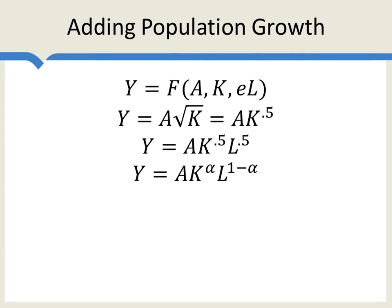This is called a Cobb-Douglas production function. The good reason for writing it this way is that when you double capital and labor, you double output. So if we're thinking about capital and labor as the only factors of production, it makes sense that if you double the only things you need to produce, you ought to double output as well. And this production function has that property.